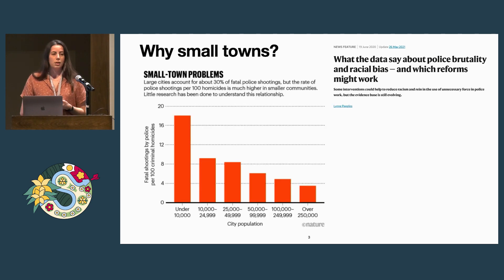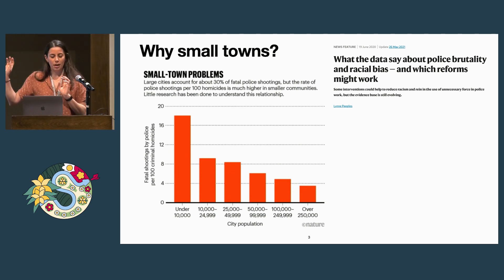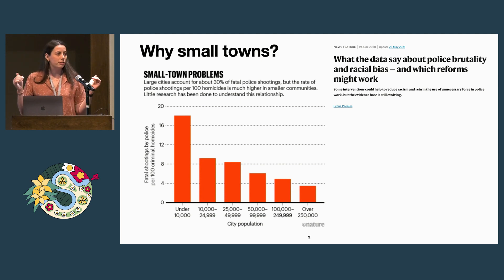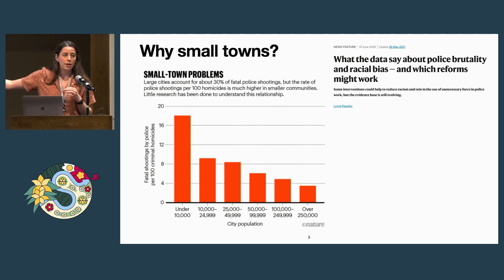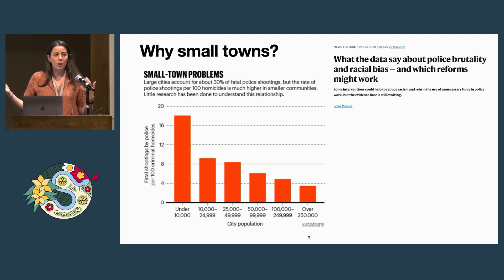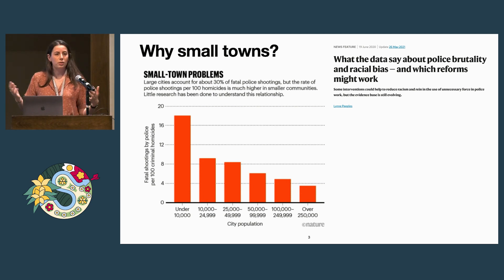So why in particular small towns? A lot of us live in big cities and maybe don't think about small town policing. This Nature article has a great graph showing the incidence of police brutality per 100 criminal homicides. Basically, given a town size and a level of general violence, how much of that is at the hands of police? We can see that for really small towns it's actually the highest, and as you grow in city size police brutality decreases. So this is showing that it is actually a more acute problem in small towns than in large cities, even though the narrative and a lot of the news surrounds larger places.